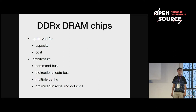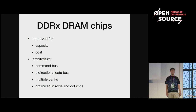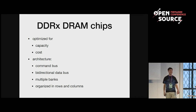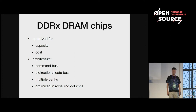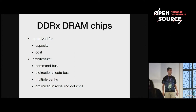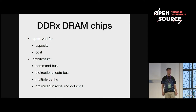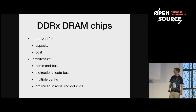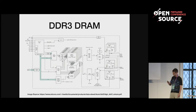Let's look at the DDR RAM chips. Those are optimized for capacity and cost — a rather big amount of memory, but in the design they had to cut some corners to bring the cost lower. The architecture has a command bus to send commands to the device, and a bidirectional data bus — the same 64 or 72 bits for one memory to read and write data. The chips have multiple banks, and the memory is organized in rows and columns. There's a nice diagram taken from a DDR3 memory datasheet.